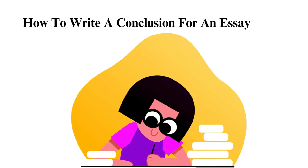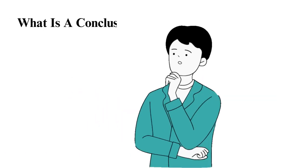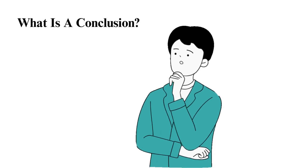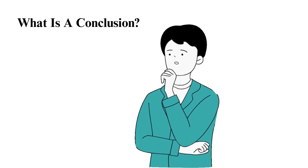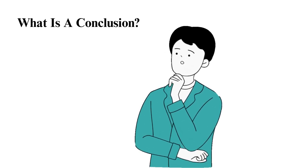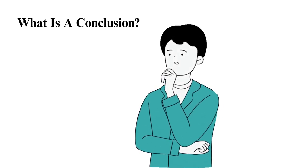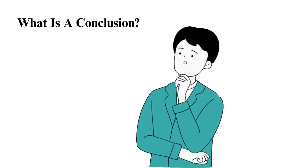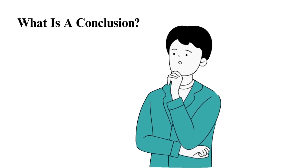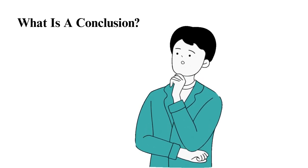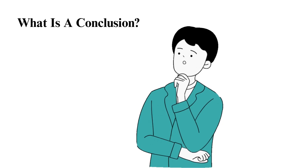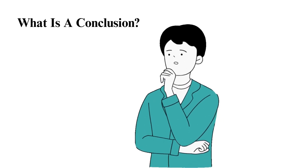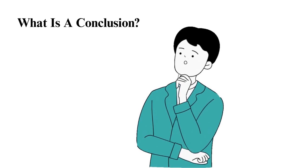How to write a conclusion for an essay. A conclusion refers to the final section of something, be it an essay, article, film, or event such as a conference. It allows the writer or creator to provide their last word on the topic of discussion and references the introduction and body of the content.